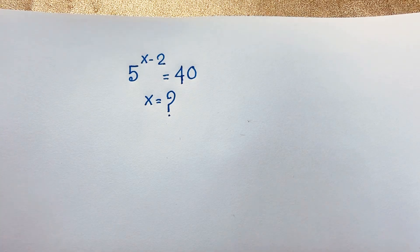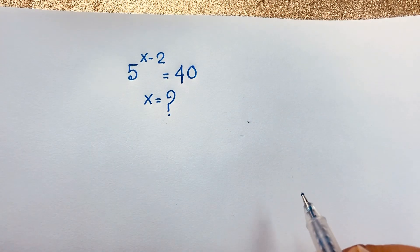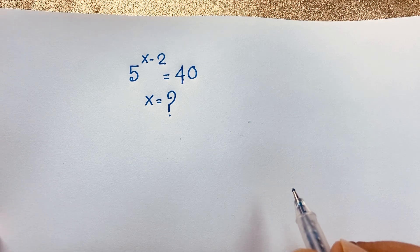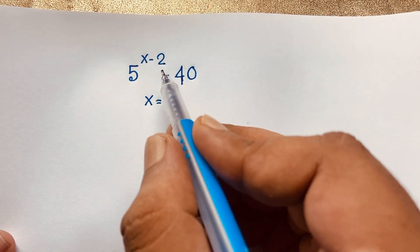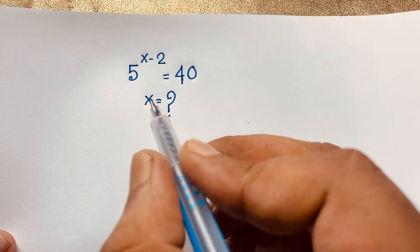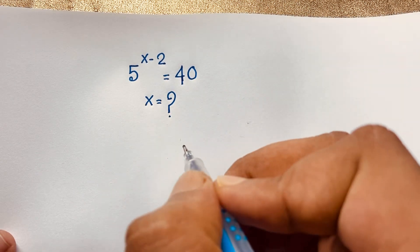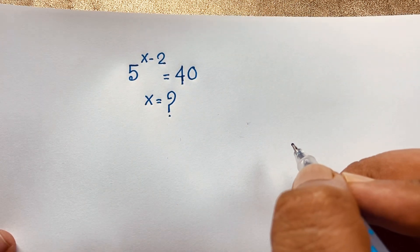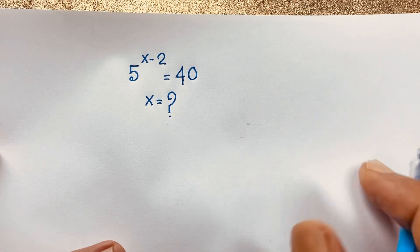Hello everyone, welcome to Rasha's classroom. Today we have solved a nice German math Olympiad question. This question is 5 to the power x minus 2 is equal to 40. We will find out what is the value of x in this exponential math problem — how to solve this interesting math Olympiad question.